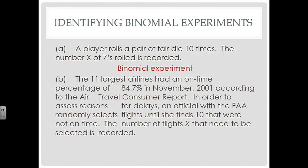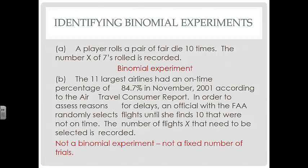The eleven largest airlines had an on-time percentage of 84.7% in November 2001 according to the Air Travel Consumer Report. An FAA official randomly selects flights until she finds ten that were not on time, and the number X of flights that needed to be selected is recorded. Was this experiment performed a fixed number of times? No — so this is not a binomial experiment.